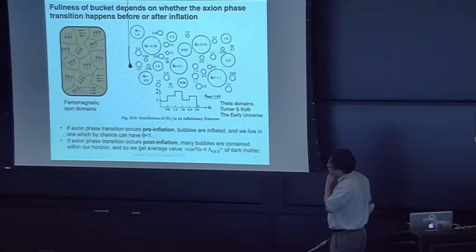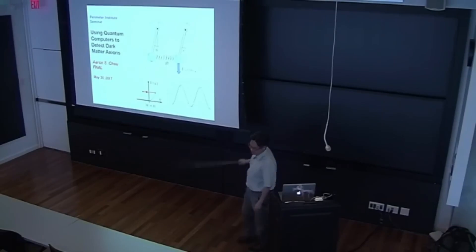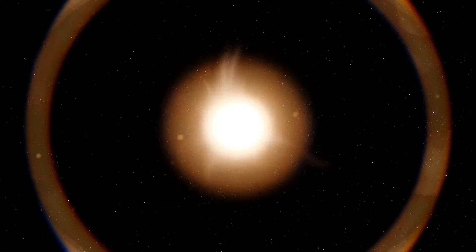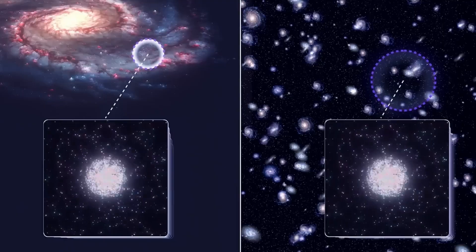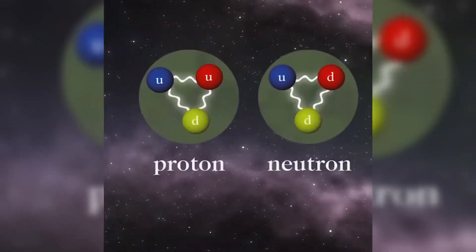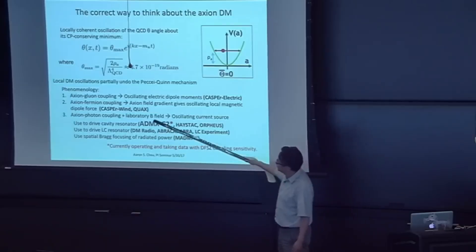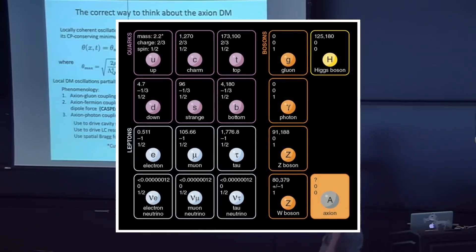The axion: a particle born from mystery. Axions were first proposed as a solution to one of the biggest mysteries in particle physics, the strong CP problem. In quantum chromodynamics (QCD), the theory that describes the strong nuclear force, there is an unexplained imbalance that should, in theory, cause certain particles to behave differently than they do.